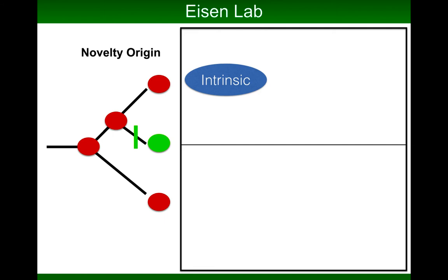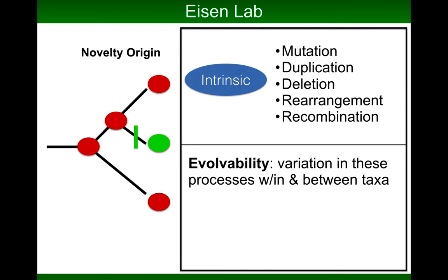Those intrinsic processes include duplications, deletions, rearrangements, and recombination. I was really interested in comparing these processes between taxa and trying to understand why some taxa went down one path for their mutation and recombination pathways and other organisms went down a different path — that is, what is the evolvability of organisms related to their intrinsic processes? Since pretty much all I know how to do is grind stuff up and sequence it, I studied this via DNA sequencing.